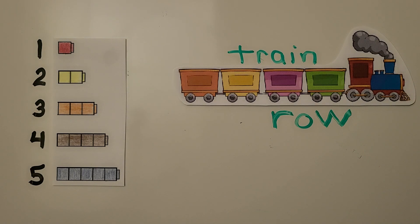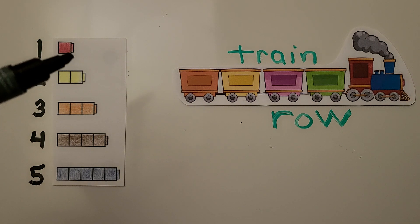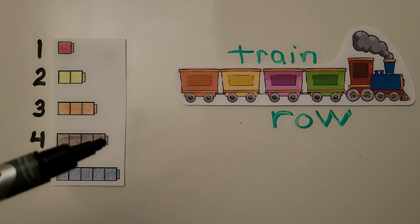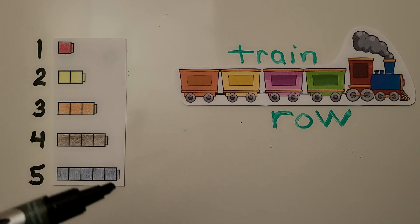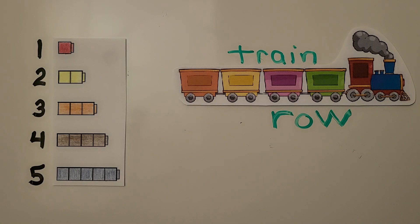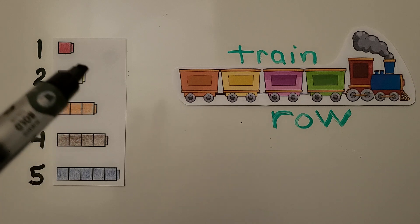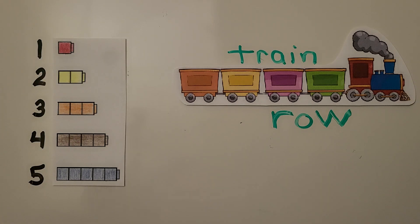Each row has one more. We can see each one is one more than the last. They also look like stairs — they look like we could go right upstairs. So a row goes across just like a train.